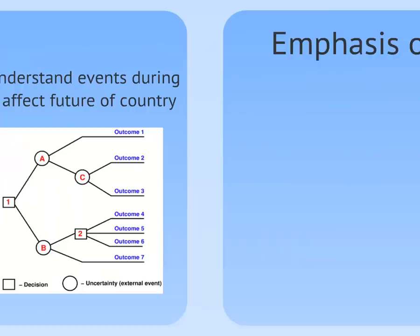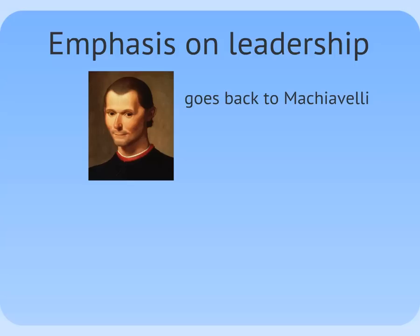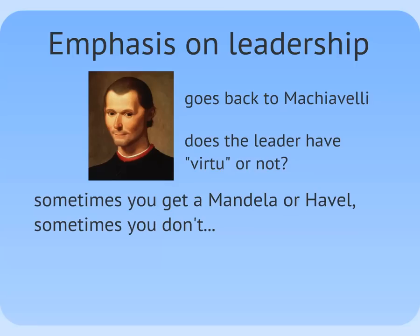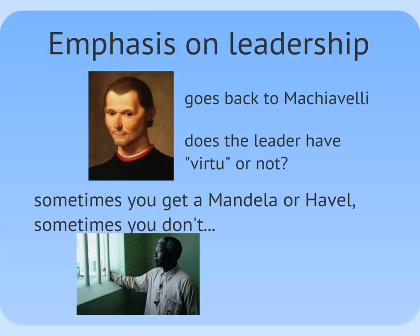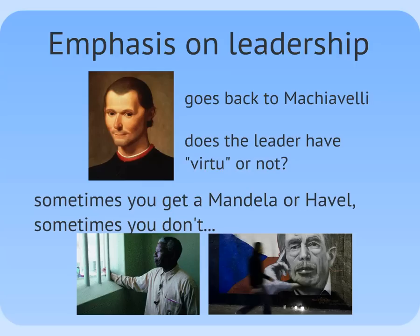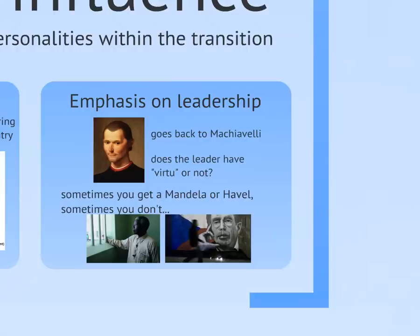Another approach is to look at the role of the individual leader, going back to Machiavelli's famous work, The Prince, in which he argues that a good leader should have virtue — the desire and capability to provide for the better good of his realm. Individual leaders are extremely important for outcomes: sometimes you get a great leader like Nelson Mandela, who helped lead South Africa towards reconciliation after apartheid, or Václav Havel, the playwright-turned-president of the Czech Republic who helped lead that country out of communism. But of course there aren't always Mandelas, Havels, or Gandhis around every corner. The problem with this approach empirically is that emphasizing an individual leader by definition makes it impossible to talk about the generalizable trends that help us understand democratization and other social phenomena.